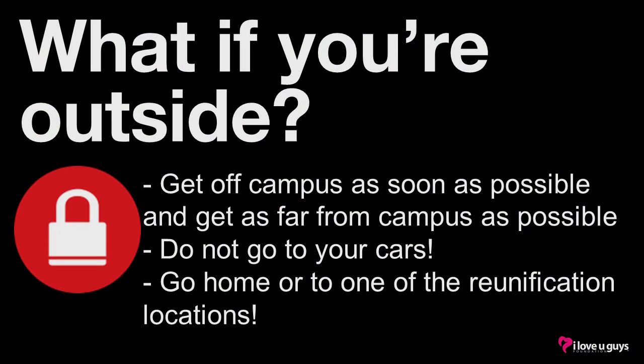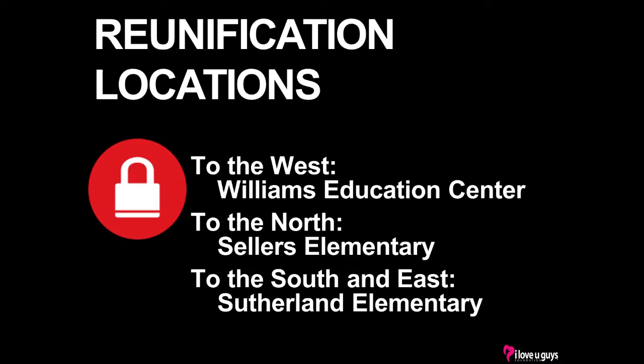What if you're outside? If you're outside and a lockdown is called, do not go back and try to get into a classroom — the doors should all be locked. Get off campus as soon as possible and get as far from campus as possible. Do not go to your cars to drive; it is much quicker and easier to get off campus on foot. When leaving campus, leave in the opposite direction of the threat. You can go home or meet at one of our reunification locations. We have three reunification centers: if you exit to the west, go to Williams Education Center; if you exit to the north, go to Sellers Elementary School; and if you exit to the east or south, go to Sutherland Elementary School.